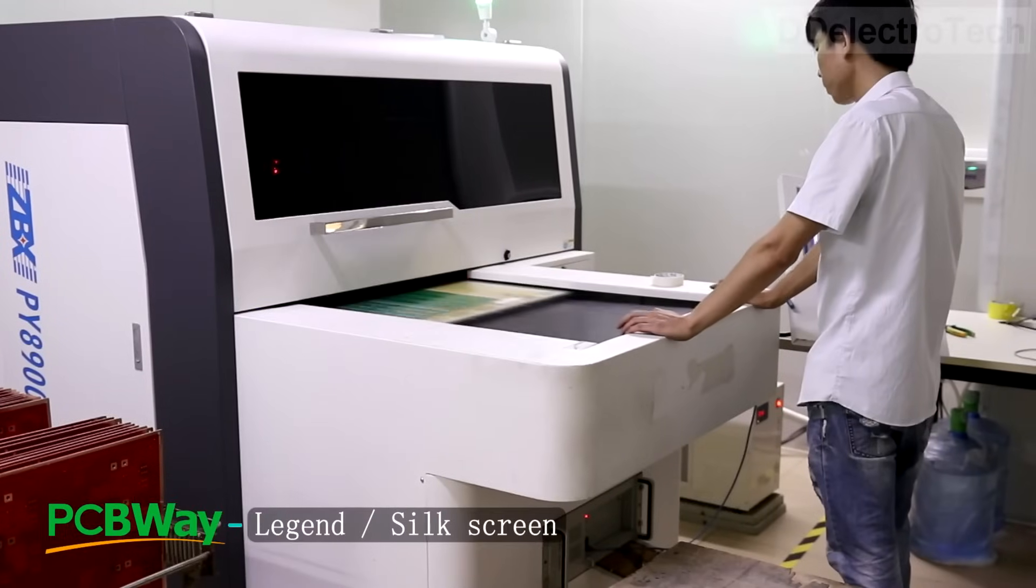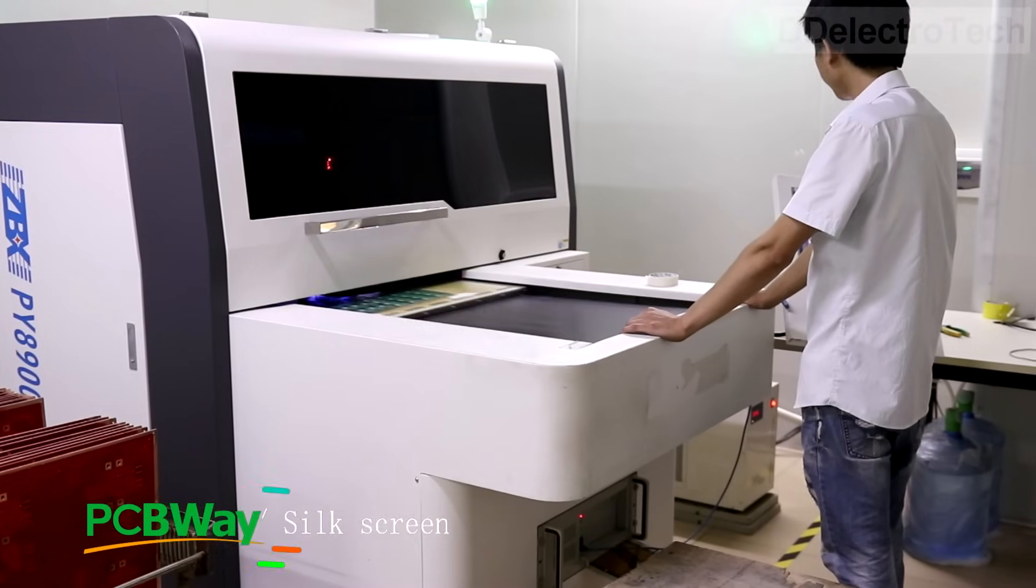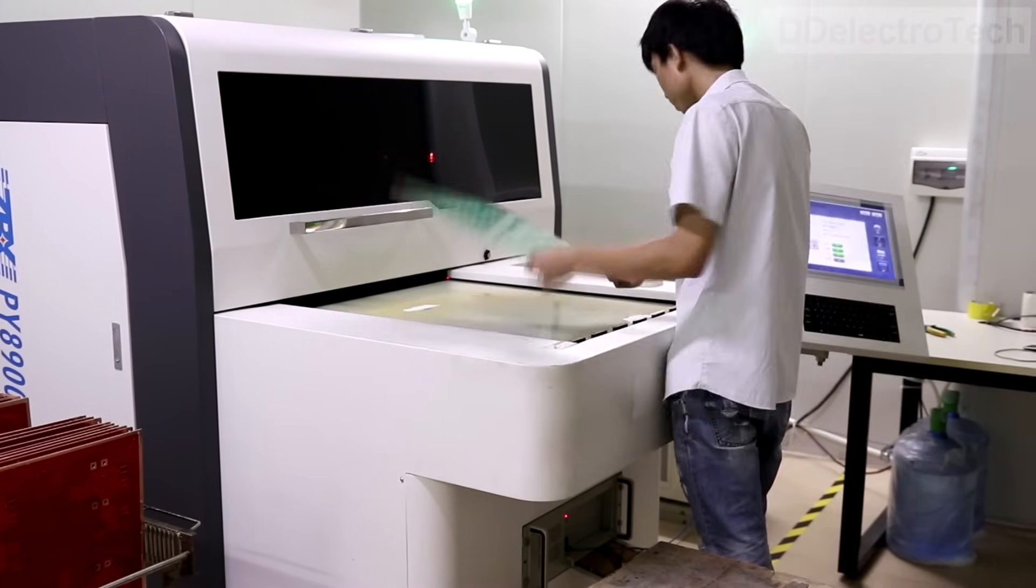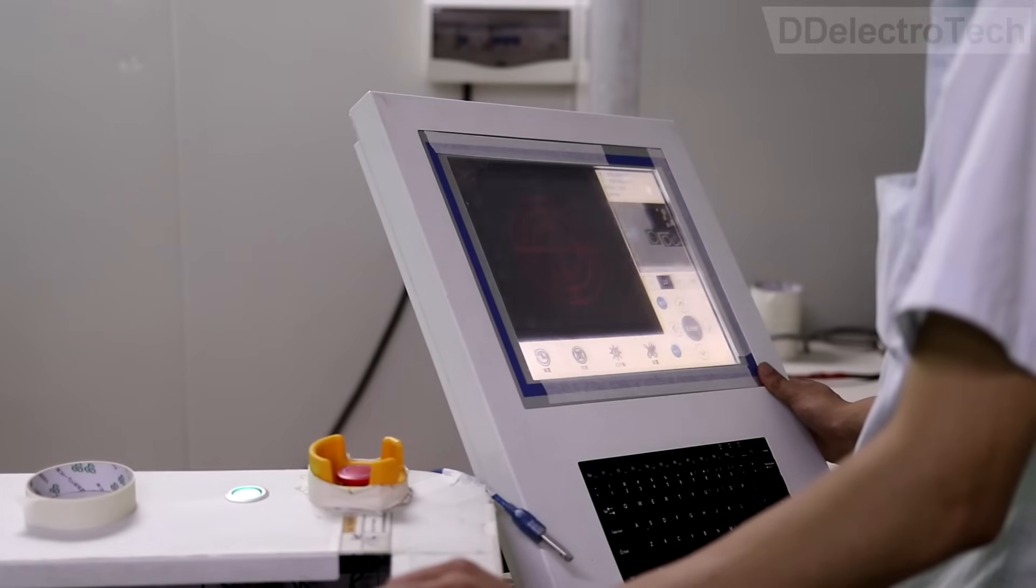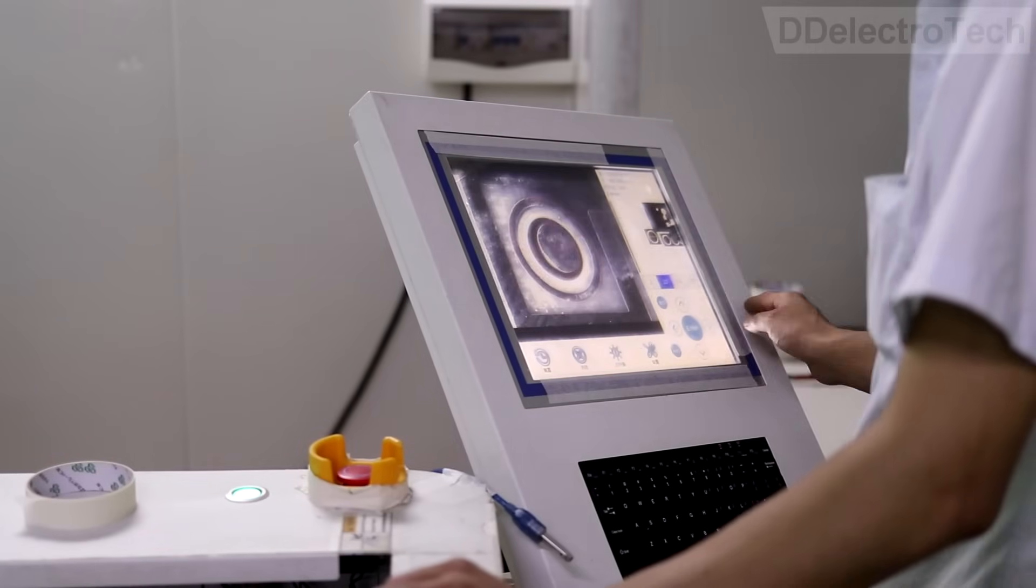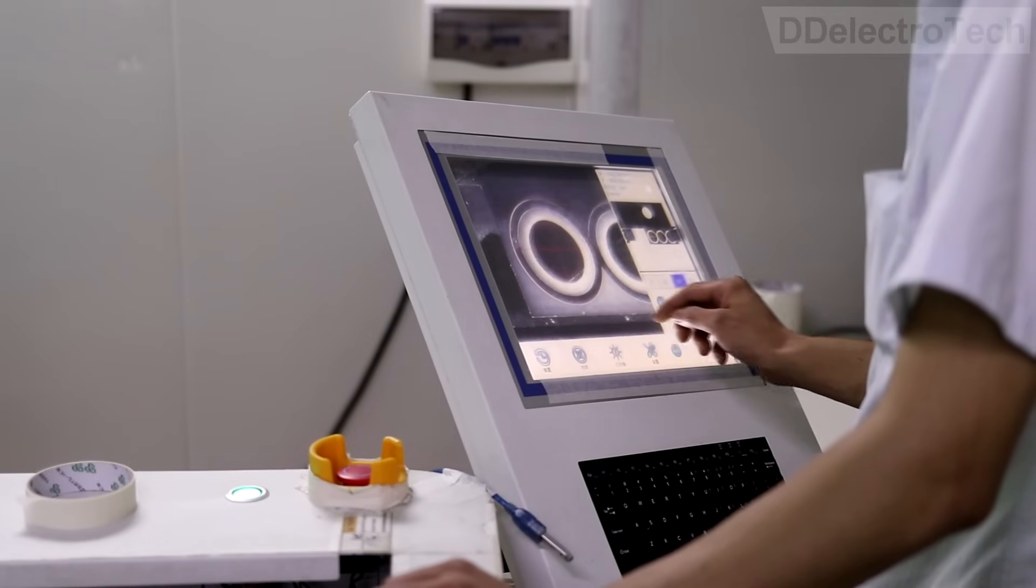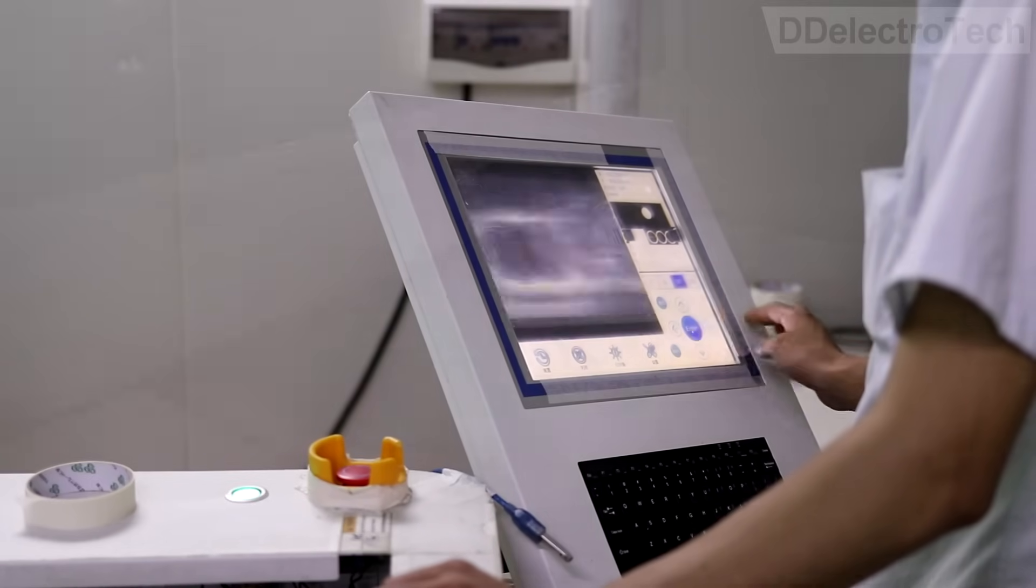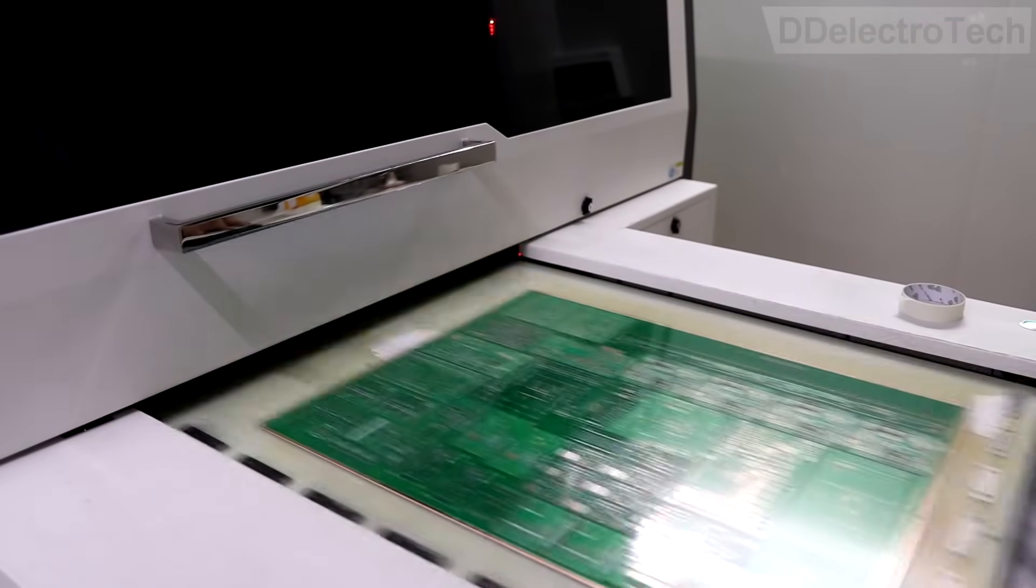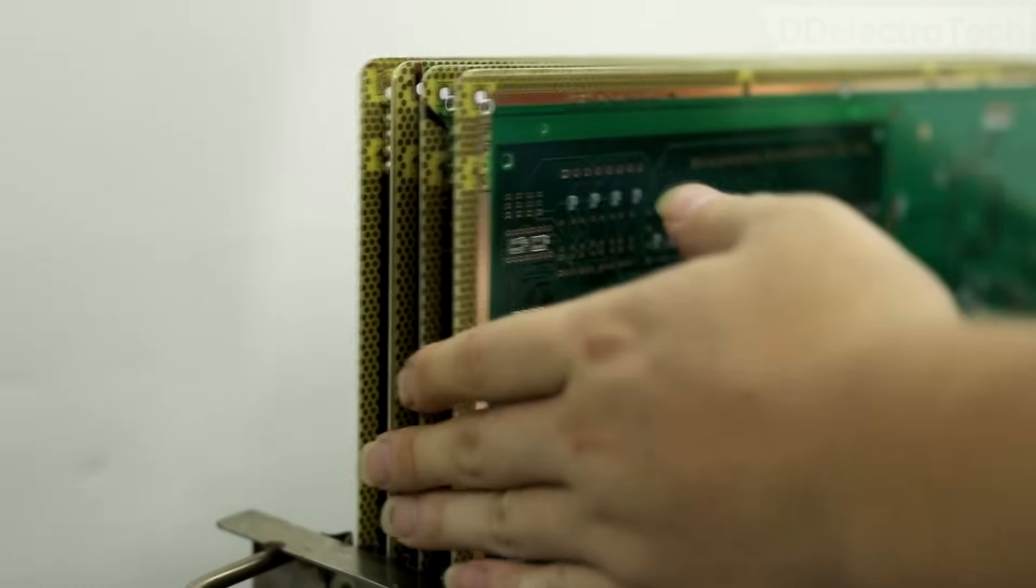Most PCBs have a component legend to show which component goes where. They use inkjet printers to image the legends direct from the board digital data. This printer is very advanced - the operator only needs to find the silk screen file corresponding to the board and set the positioning on the main control computer. Then the ink will be applied on the boards evenly and automatically. Moreover, it can also be printing and curing on the same system.